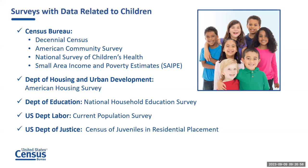One of the primary reasons the census is involved with so many surveys is our relationships with outside agencies that work with census to collect data — agencies like the US Department of Justice and the Department of Labor. The Census Bureau has several sources that provide information for children: the decennial census, the American Community Survey, the National Survey of Children's Health, the American Housing Survey (a collaboration with HUD), the National Household Educational Survey (sourced with the Department of Education), the Current Population Survey, and the Census of Juveniles in Residential Placement, collaborations with the US Department of Labor and the US Department of Justice, respectively.